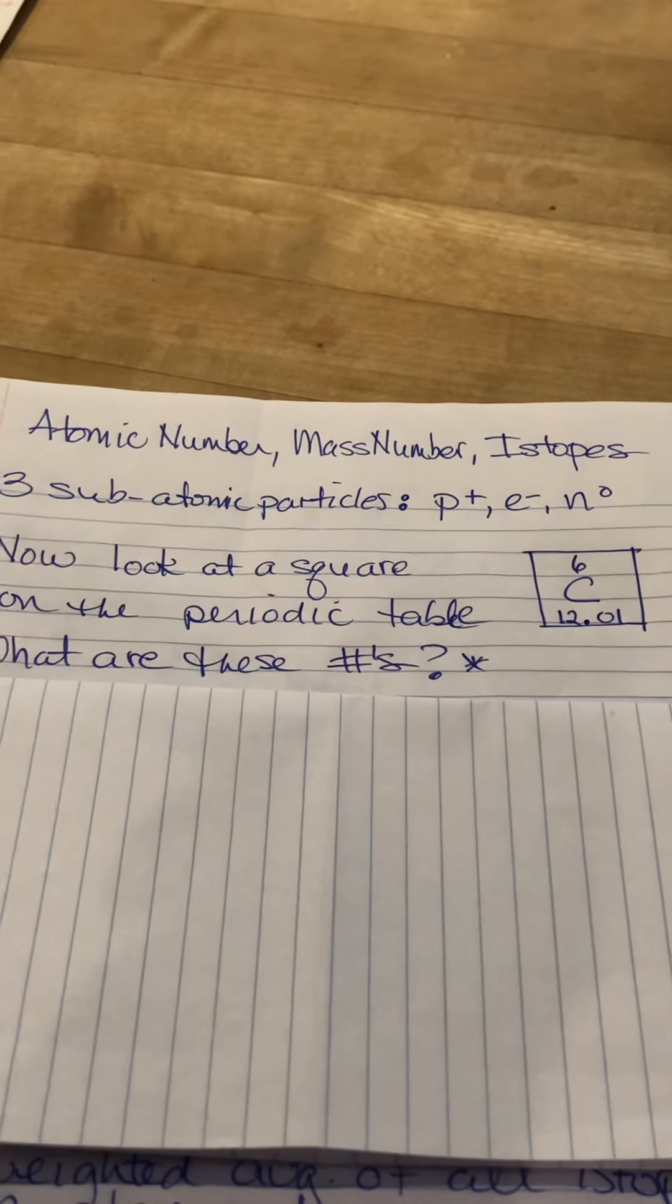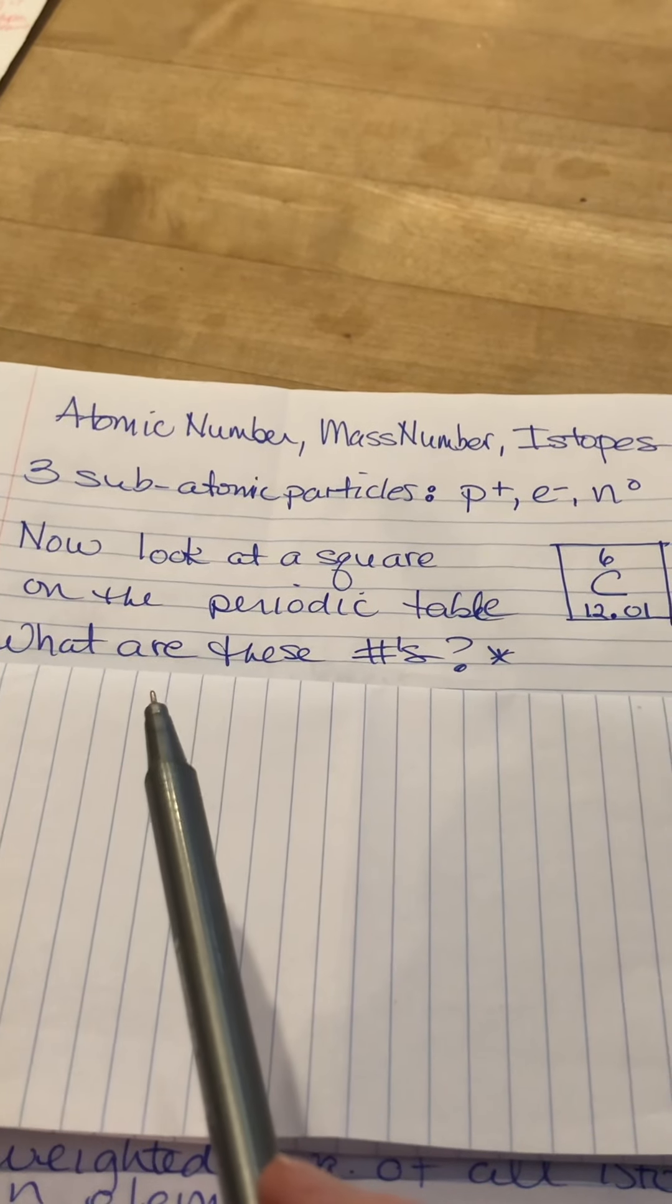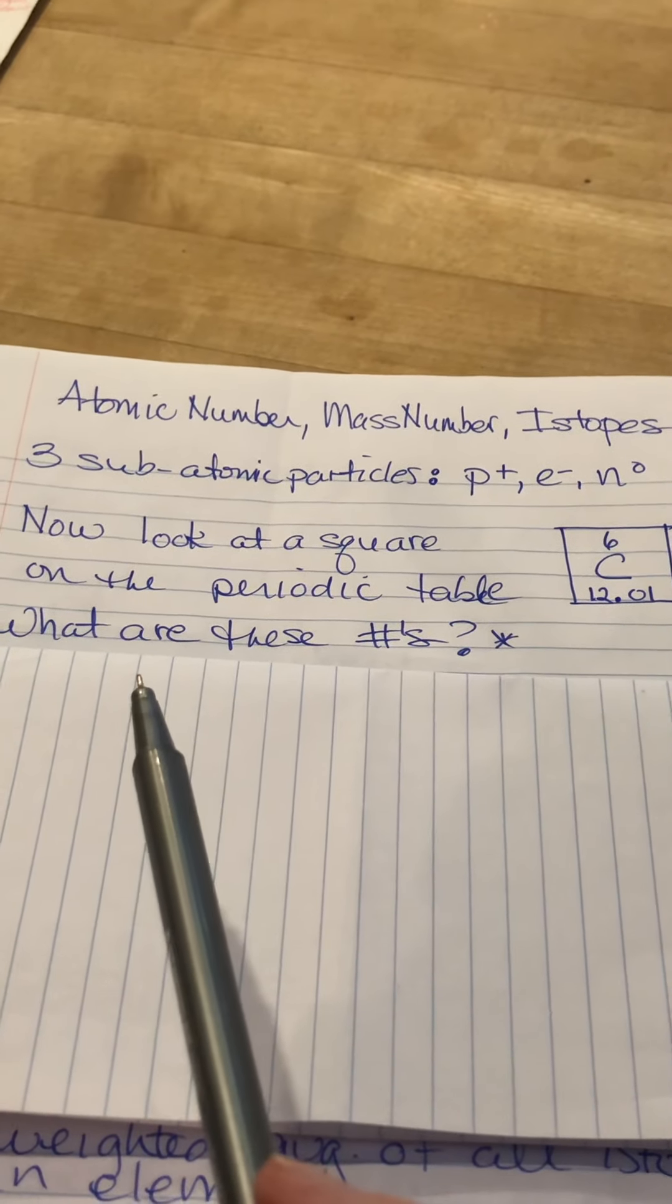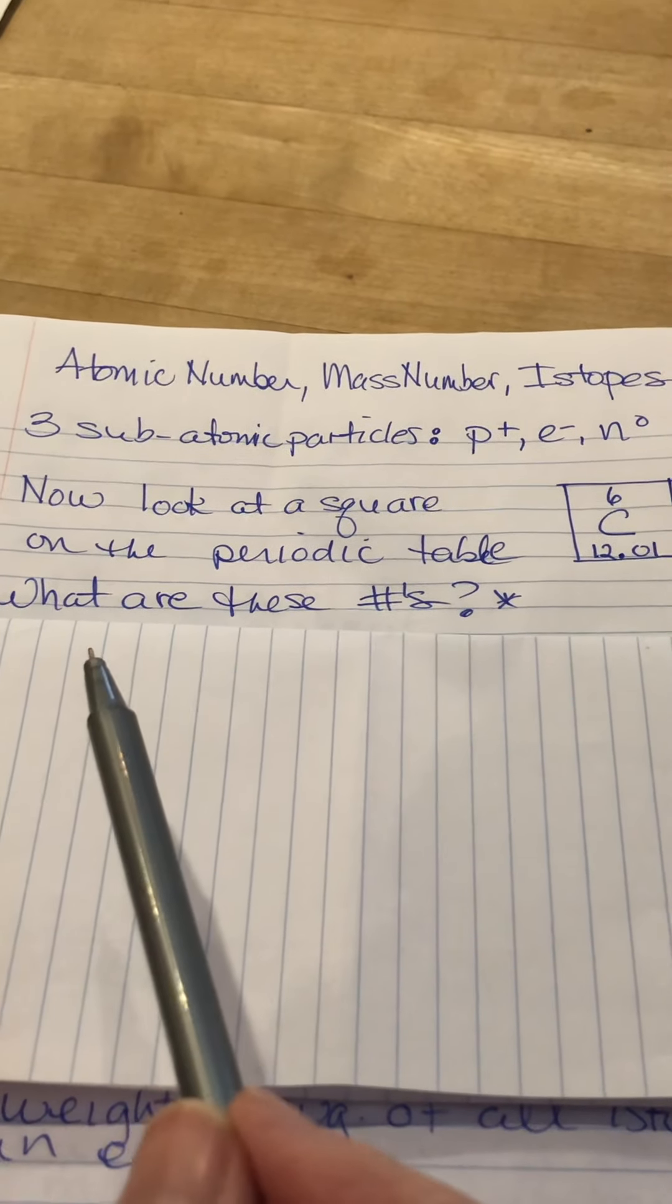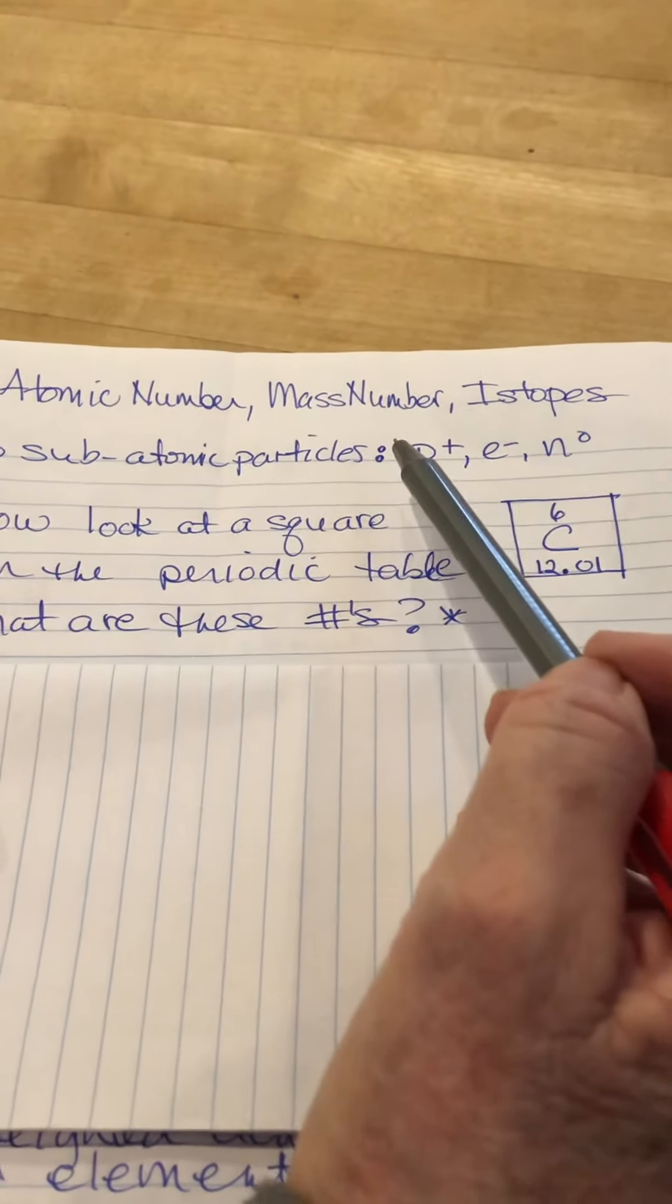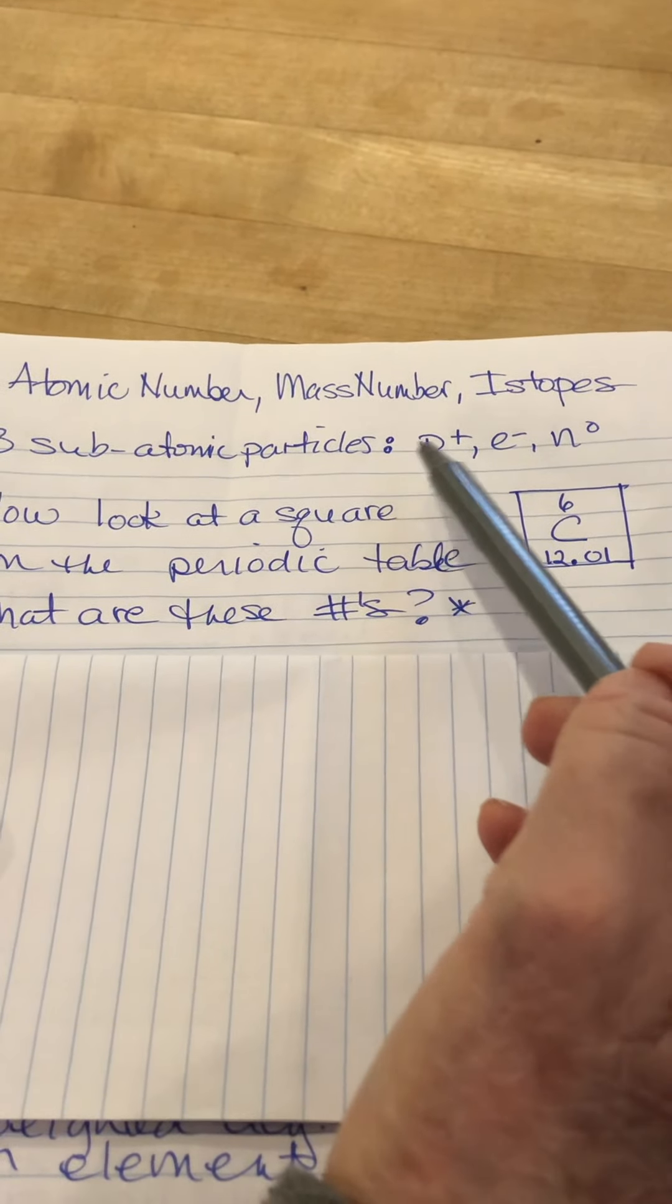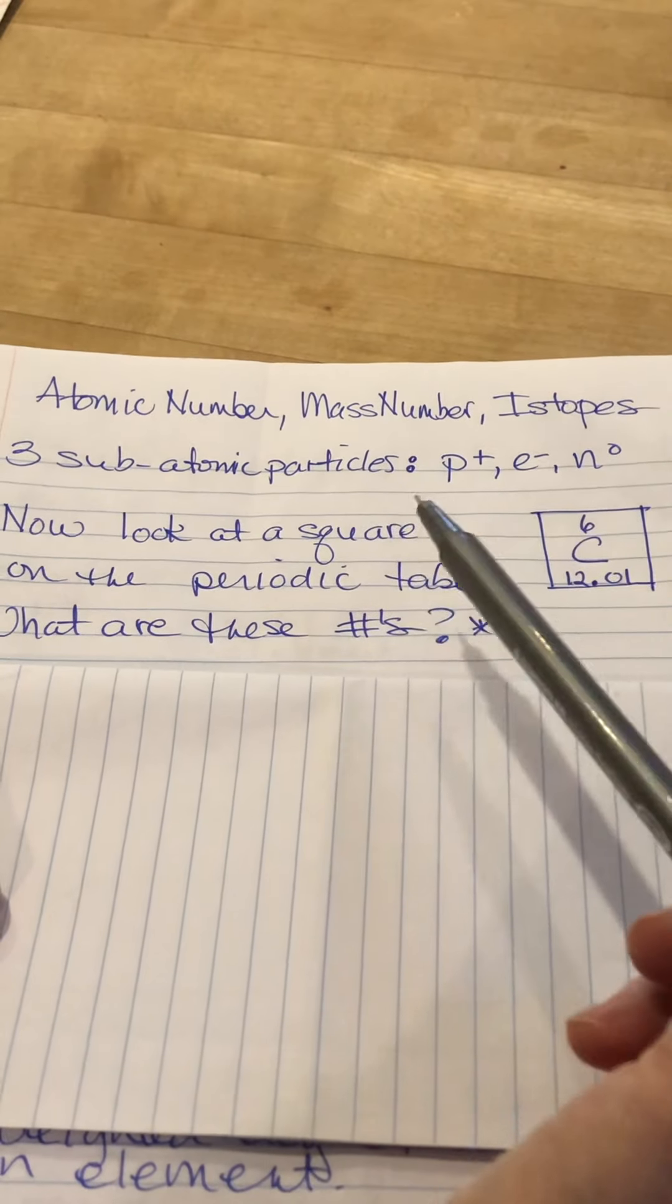Last time we talked about the structure of the atom and how Thompson figured out there were electrons in all atoms, Rutherford figured out the location of the protons, and later Chadwick, in the 30s, figured out the number of neutrons. You guys know that there are protons, electrons, and neutrons as the three subatomic particles in an atom.